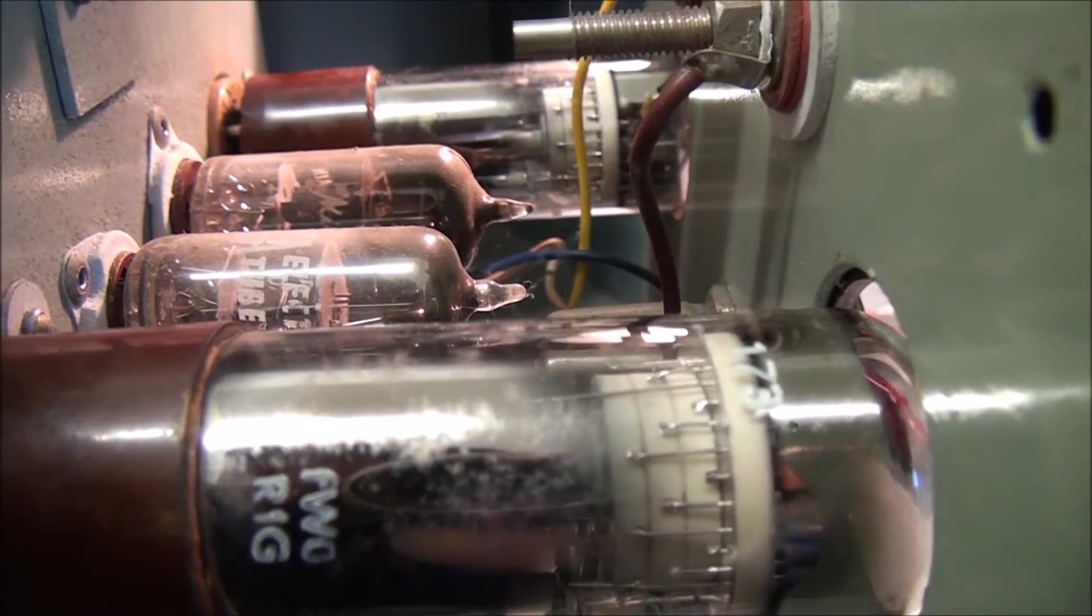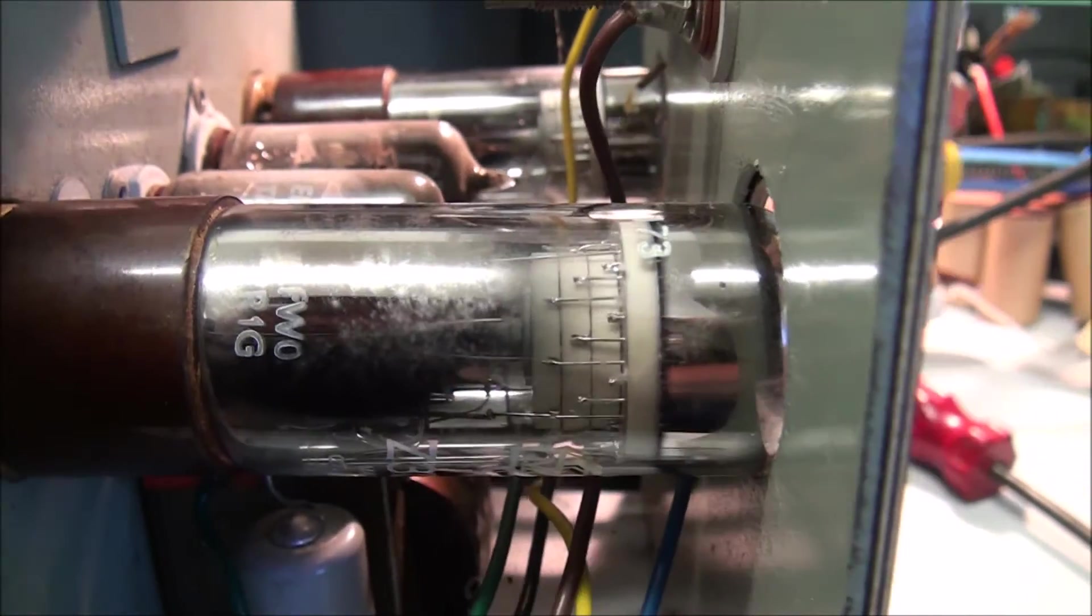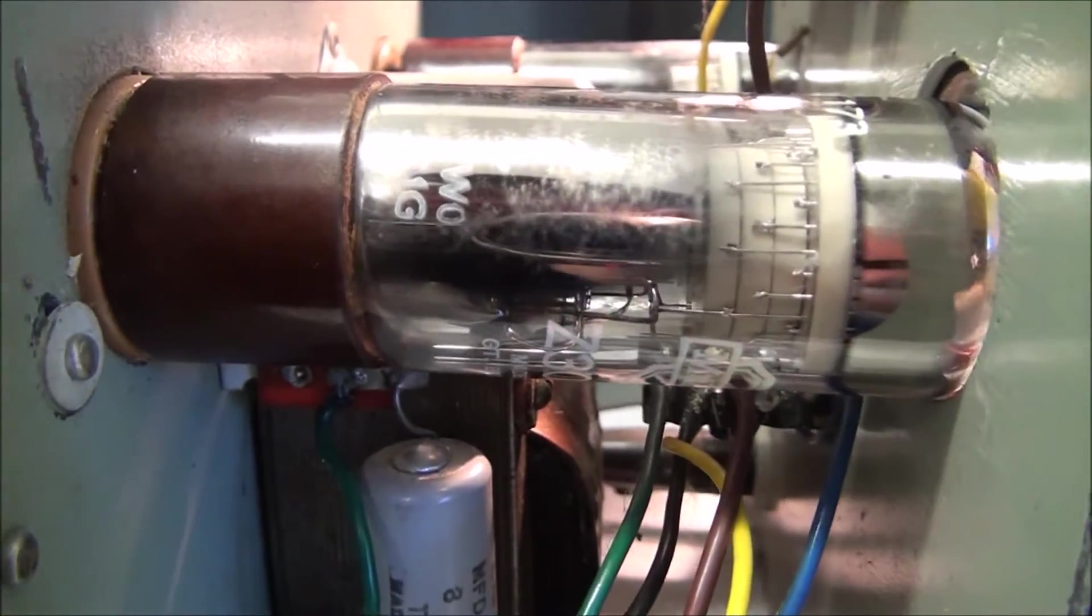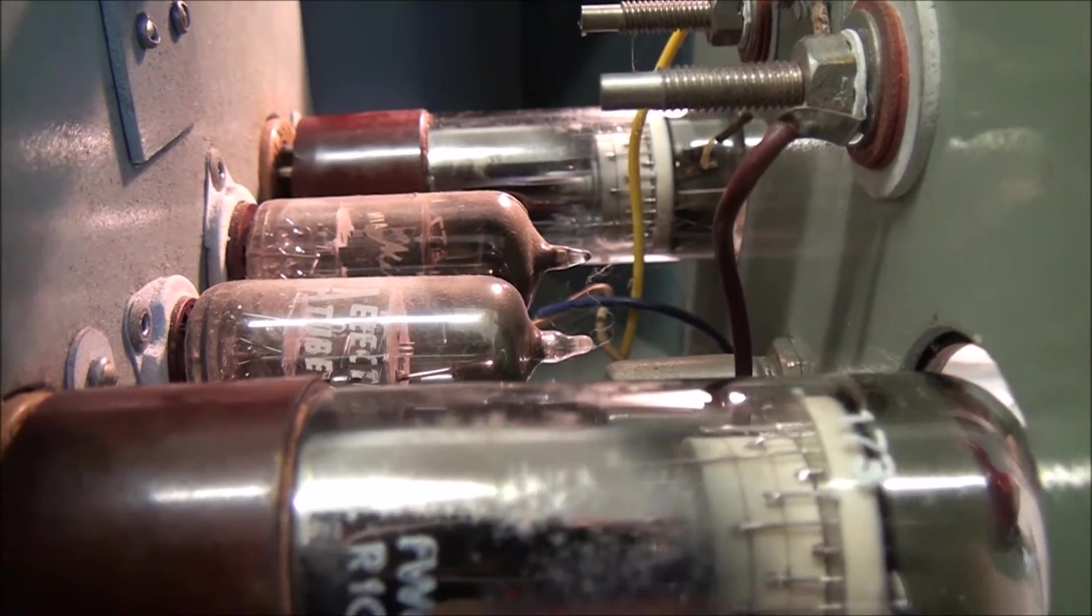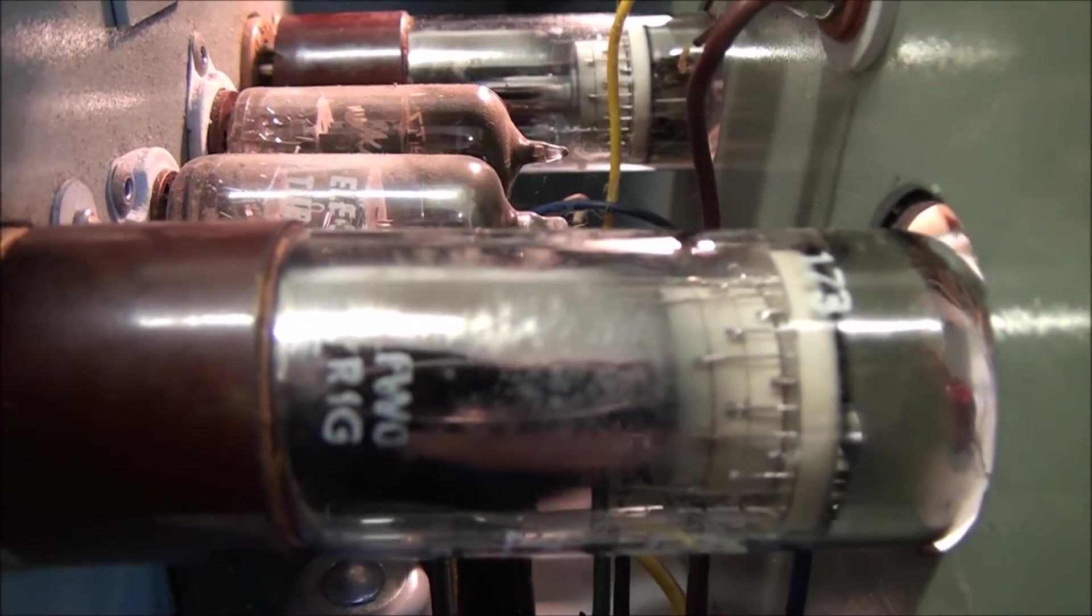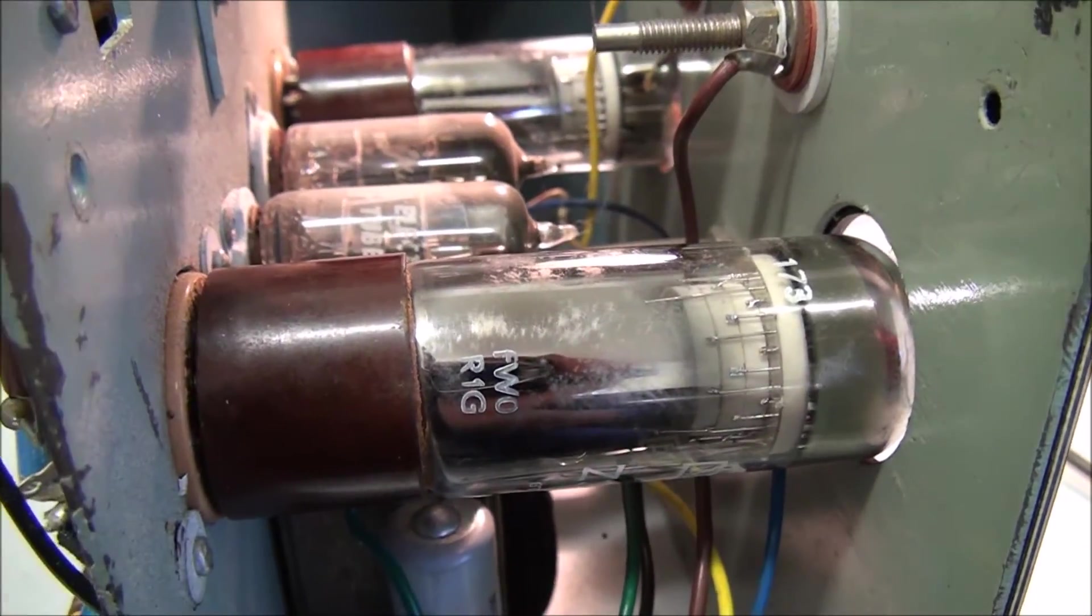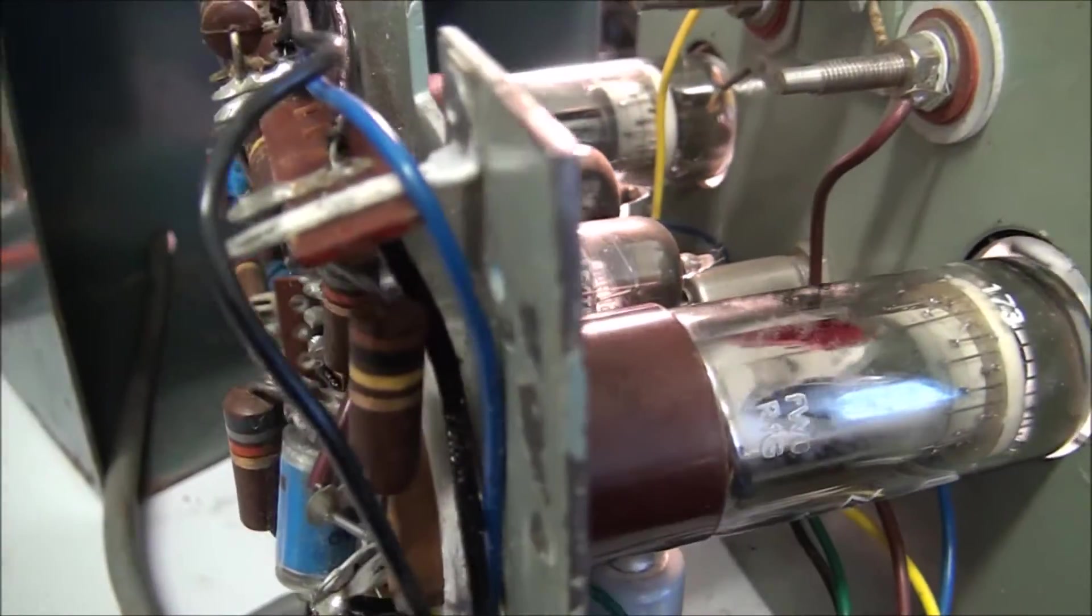This unit has a pair of Dekatrons, Z303C's. I think they are the same as the GC10B, neon filled. I think this instrument would have been made from the 1950s.